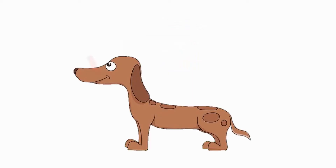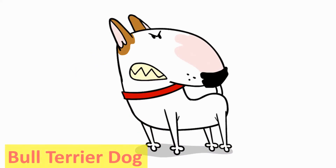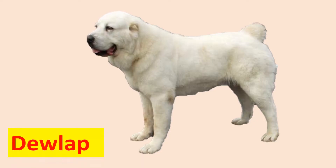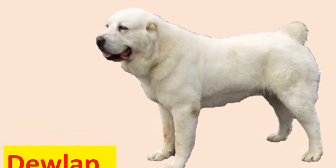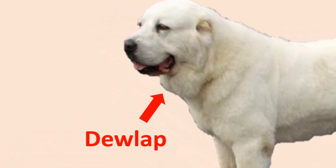Stop — the indentation between the muzzle and brain case is the stop. It is present in almost all dogs, though in some breeds it is less prominent, and in some like the bull terrier it is non-existent. Throat latch — the throat latch is a flap of skin below the lower jaw.